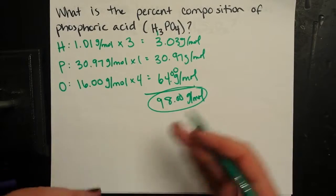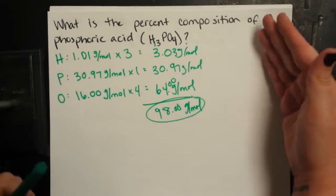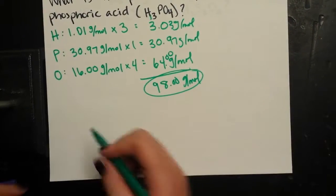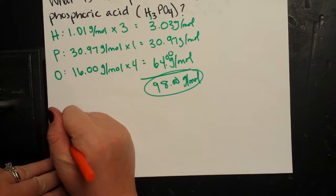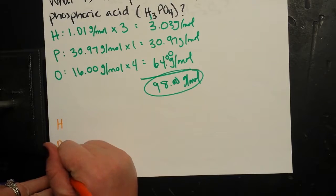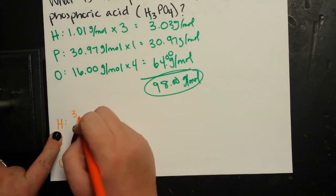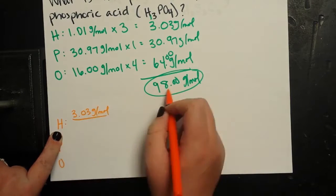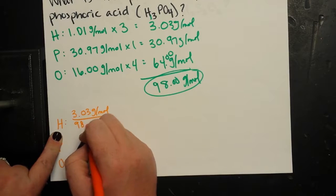So to find the percent hydrogen, I'm going to go ahead and just carry it down. For hydrogen, hydrogen contributes only 3.03 grams per mole for every 98 grams of the compound.